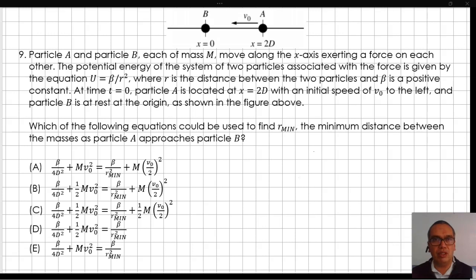Which of the following equations could be used to find r min, the minimum distance between the masses as particle A approaches particle B?